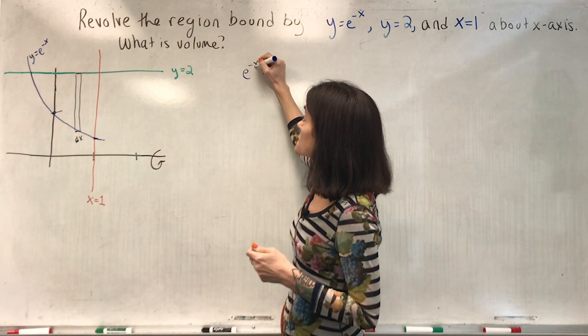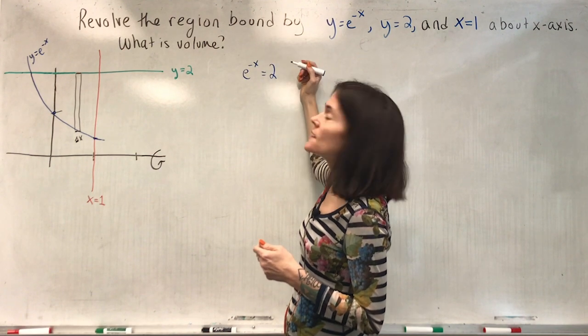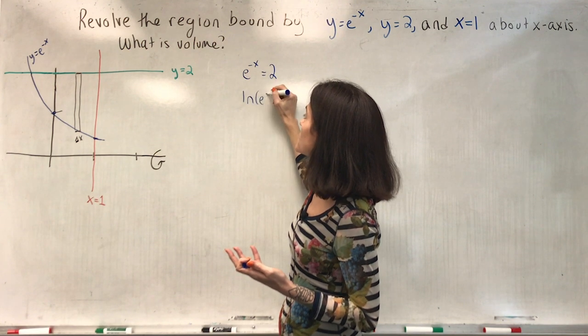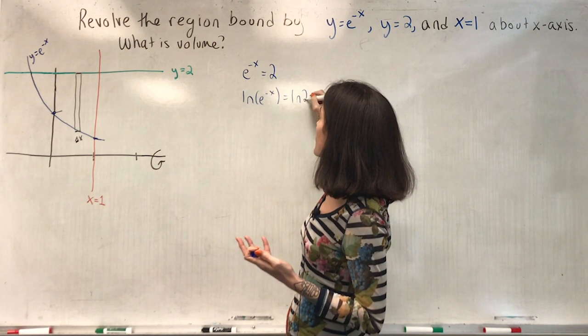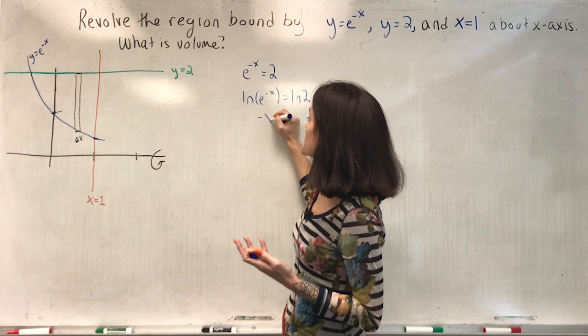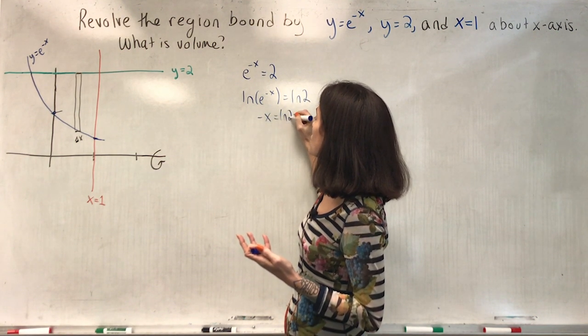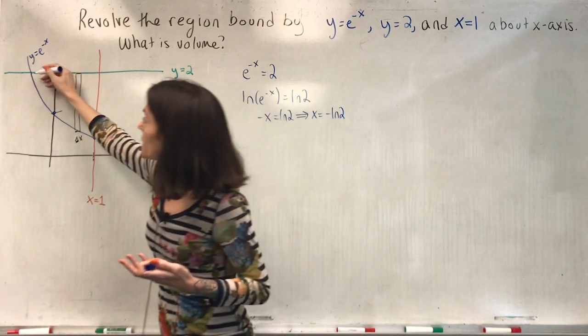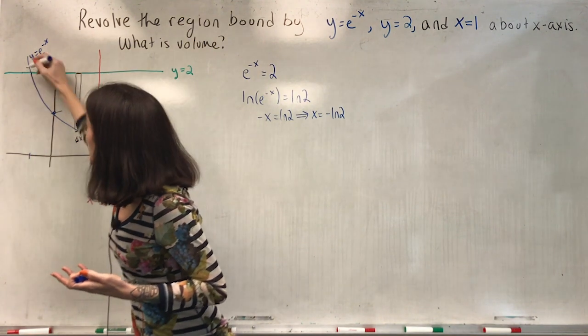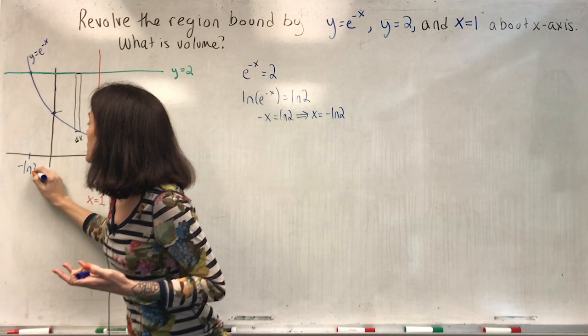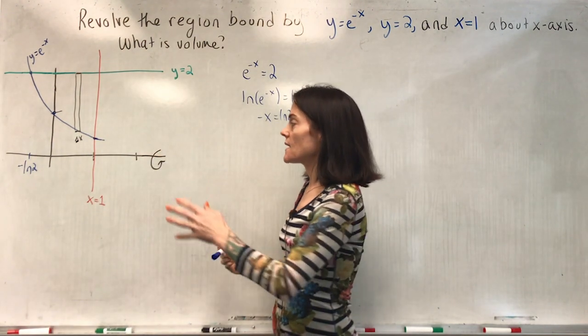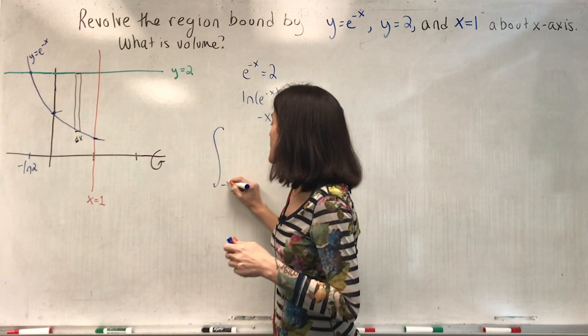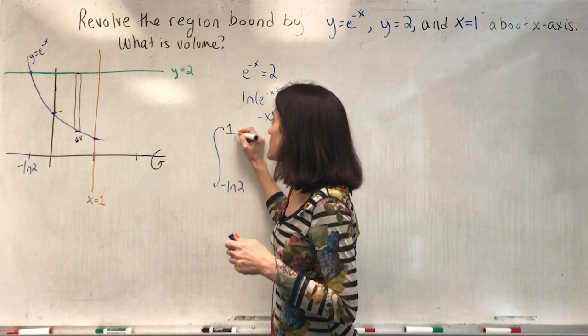Setting these two curves equal and solving for x. Well, this is not too terribly bad. We take the natural log of both sides and we get that minus x is ln 2, or x is negative ln 2. So this point here, where they intersect, is negative ln 2. Now we see our limits of integration. So we will integrate from negative ln 2 to 1.